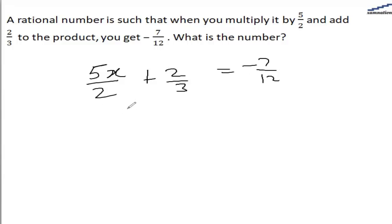So let's solve it. That will be 15x plus 4 over 6 equals minus 7 by 12.